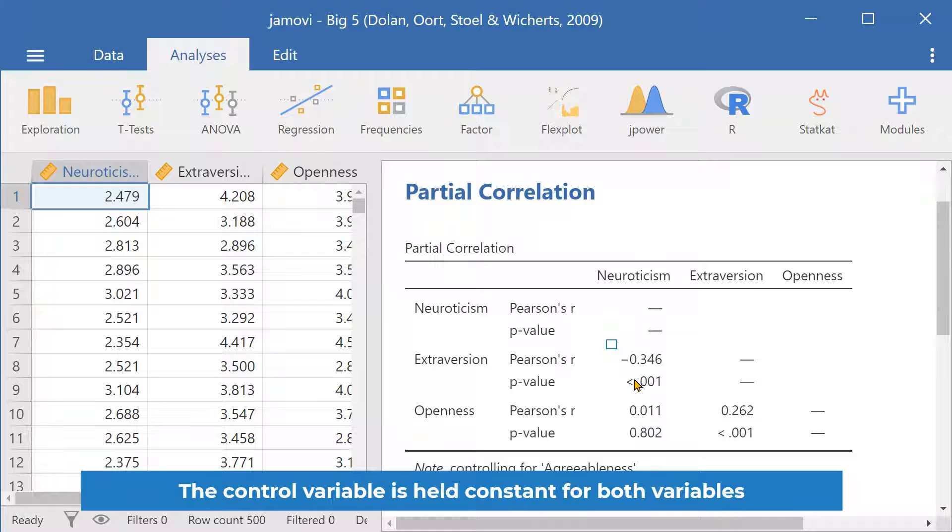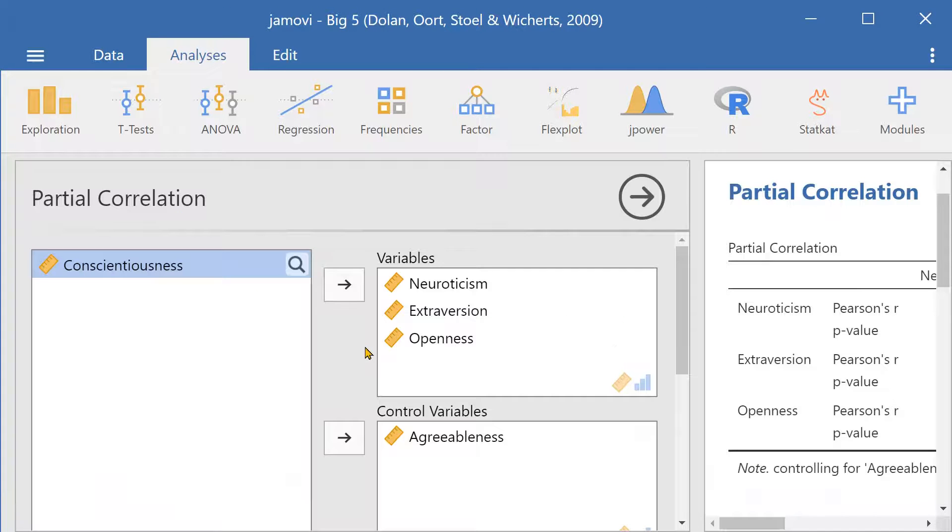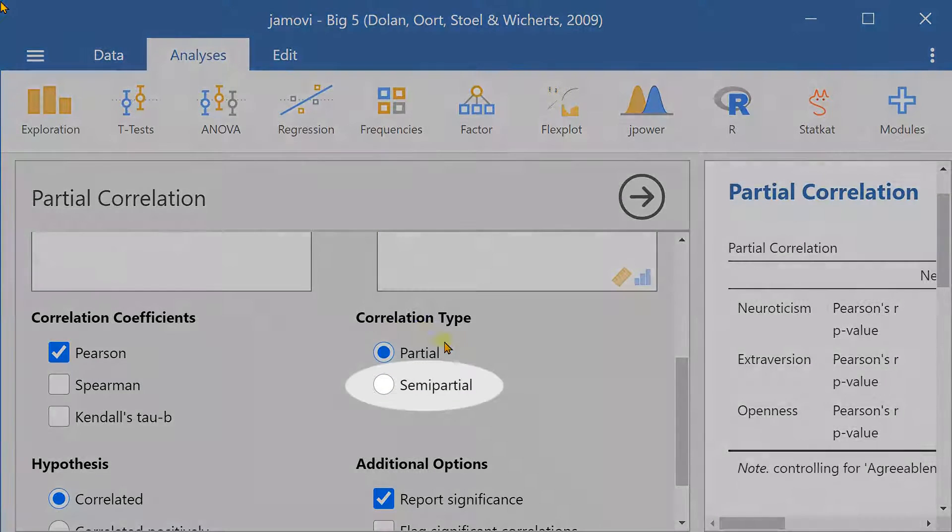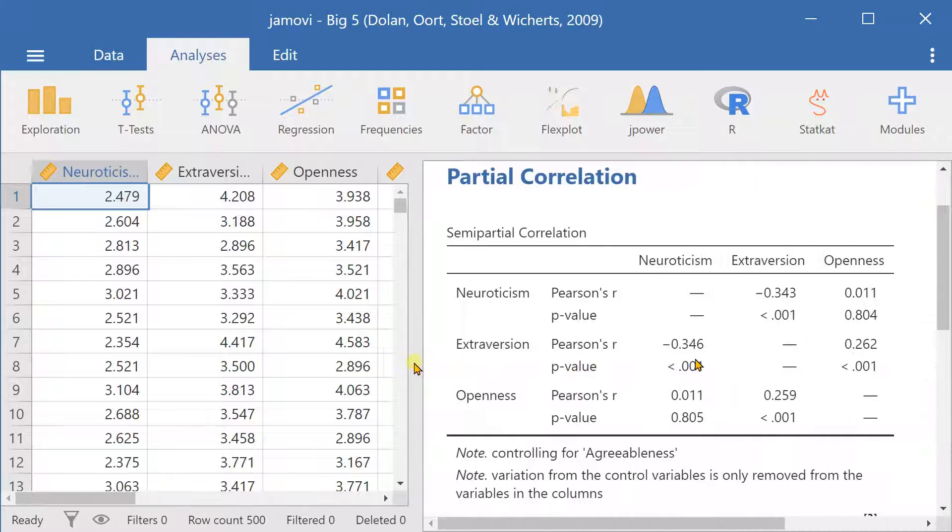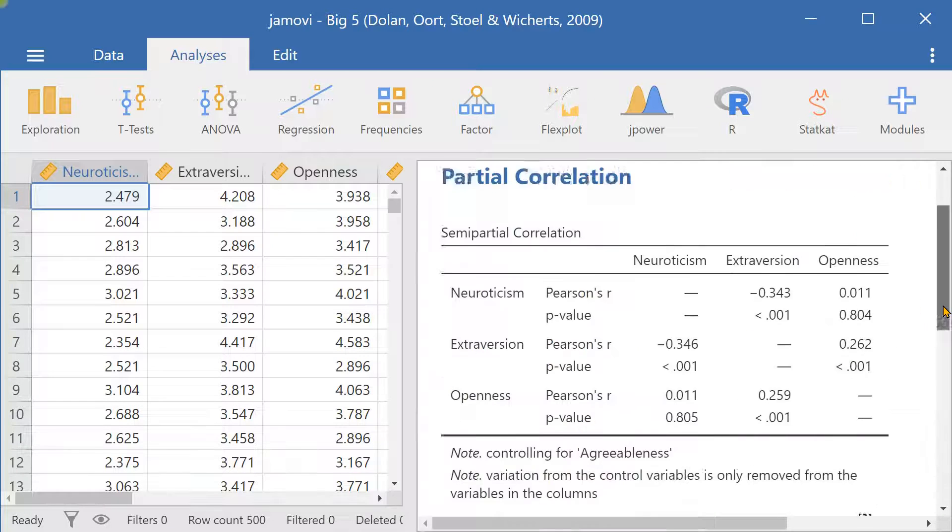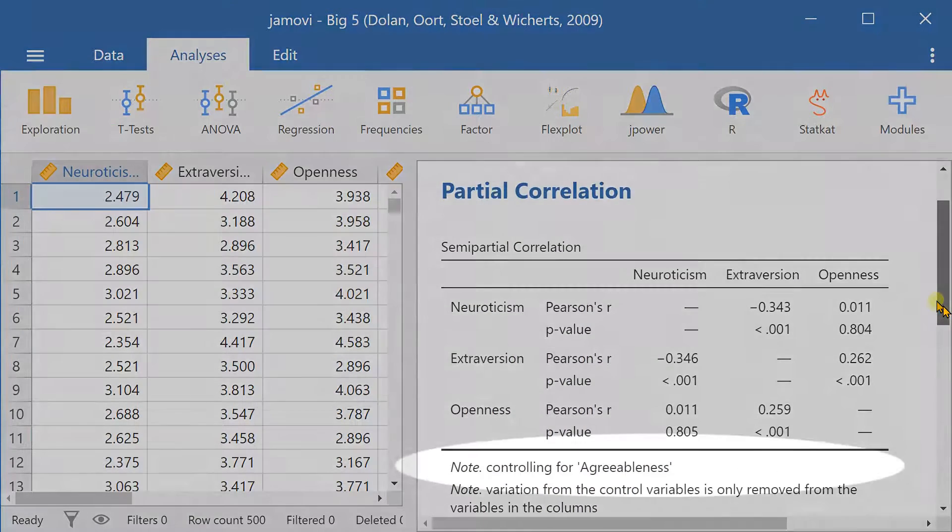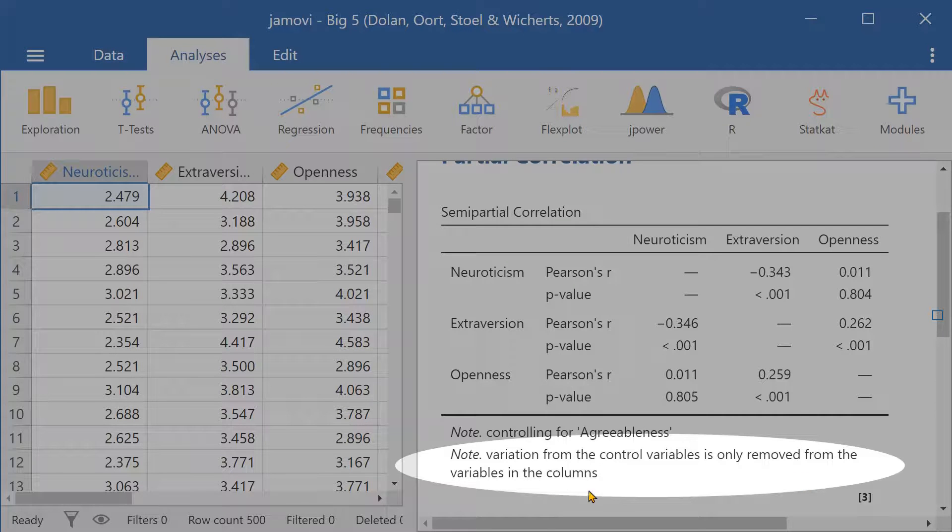For semi-partial correlation, we go down to correlation type and press semi-partial. So here in semi-partial correlation, we notice that the variation from the control variables is only removed from the variables in the columns.